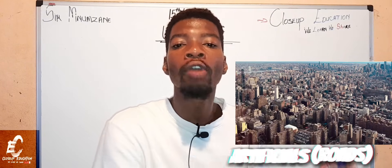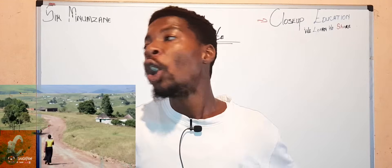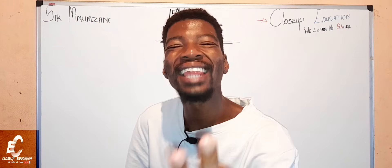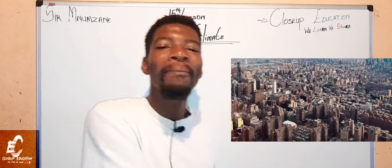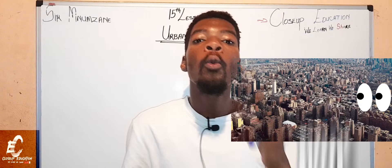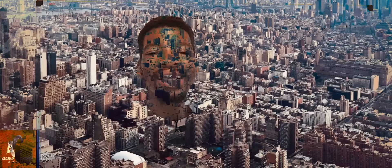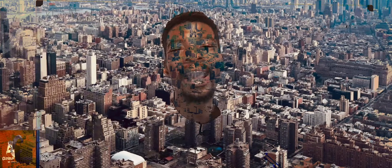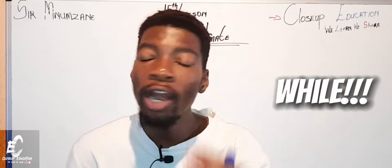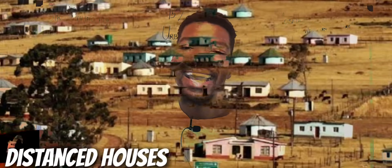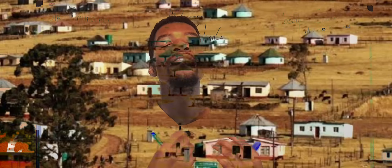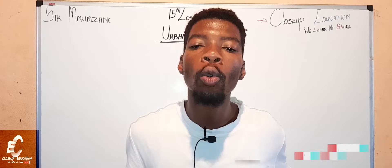In an urban area there are a lot of artificial surfaces such as roads, whereas in a rural area you would walk on soil. Our third difference is that in an urban area there is less green — meaning less vegetation — because the buildings are closely packed together with no free space for vegetation to grow, while in a rural area there is open land where vegetation can freely grow.